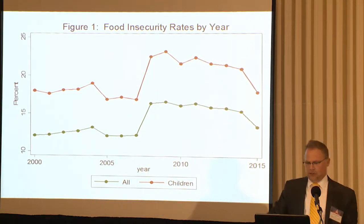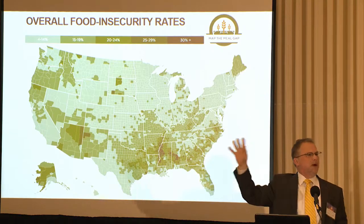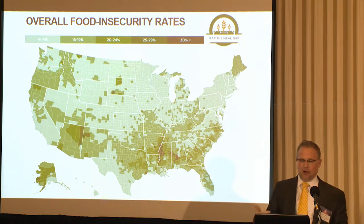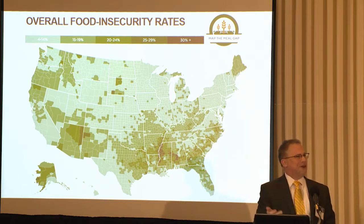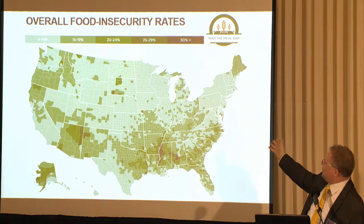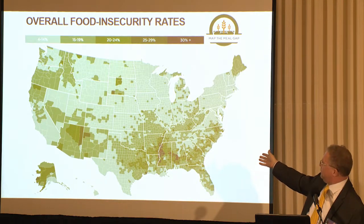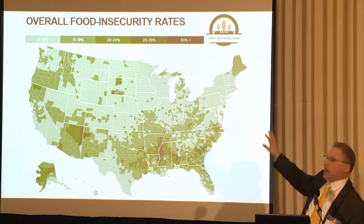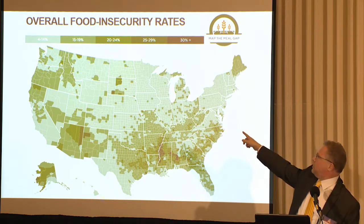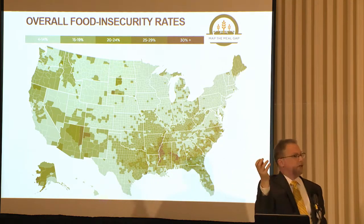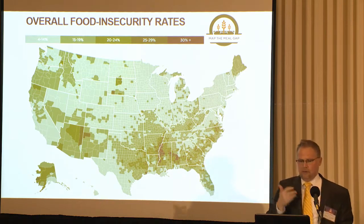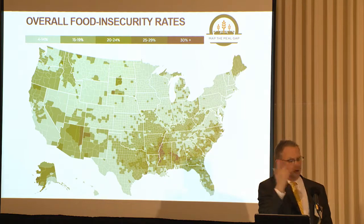Here are the food insecurity rates by year for all households and for households with children. Feeding America is a wonderful organization — it's the umbrella organization for all food banks in the United States. They have something called Map the Meal Gap, which gives county-level estimates of food insecurity for all counties. On this map, you can see that across Appalachia, there are really high rates of food insecurity; across the Mississippi Delta, high rates as well. In the upper Midwest, rates are relatively low, with the exception of North and South Dakota, where pockets of really high food insecurity correspond to American Indian reservations.